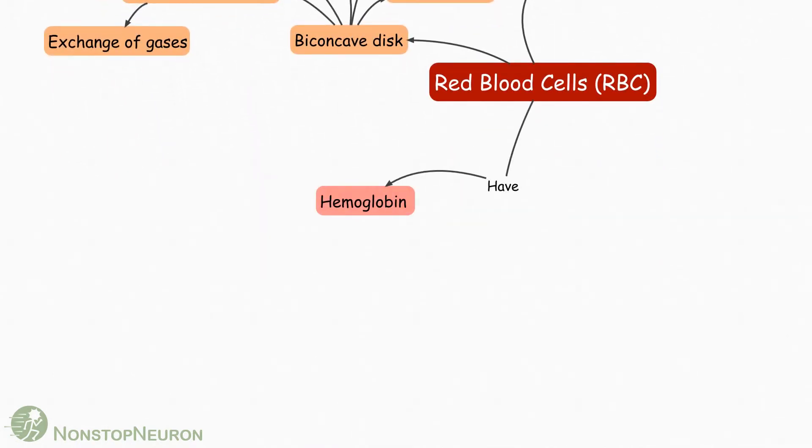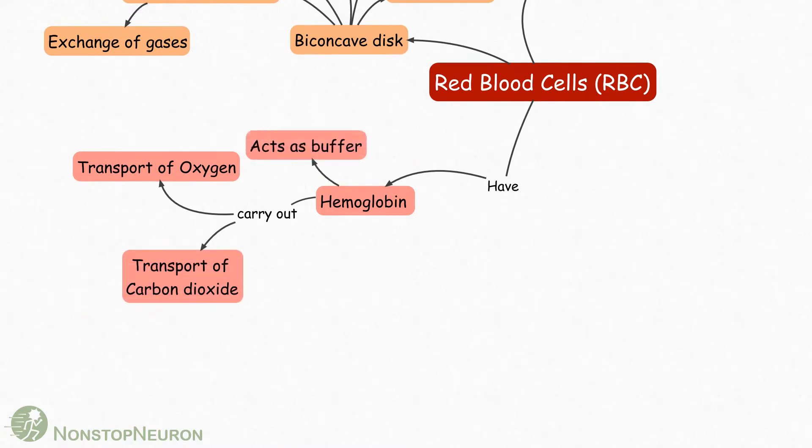Now, RBCs have hemoglobin which carry out transport of oxygen and transport of carbon dioxide. It also acts as buffer and contributes in acid-base balance.